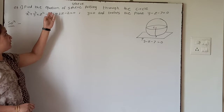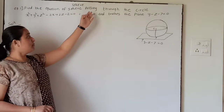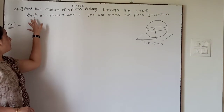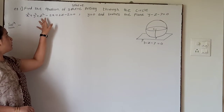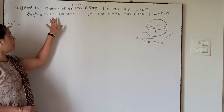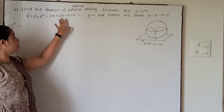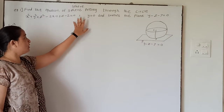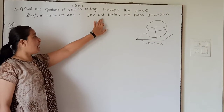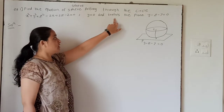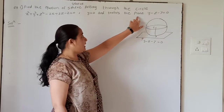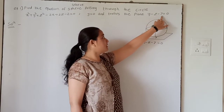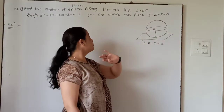First example: find the equation of sphere passing through the circle given by x² + y² + z² − 2x + 2z − 2 = 0, y = 0, and which touches the plane y − z − 7 = 0.